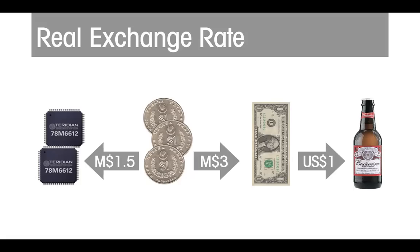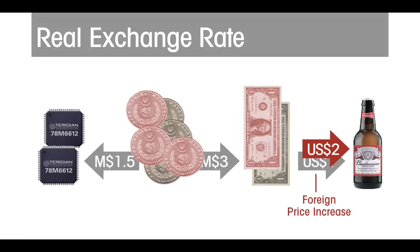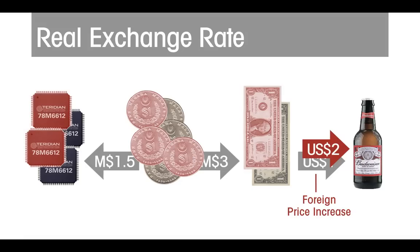But the concept is meaningless as an absolute number — its importance comes from when the value changes. Suppose there is a rise in the US price level, so that it now takes $2 to buy a beer. At 3 ringgits per dollar, you now need 6 ringgits, for which you will have to part with 4 chips. The cost of the beer has gone from 2 chips to 4. The real exchange rate has risen, even though the nominal rate has not moved. This means that Malaysia has suffered a real depreciation, since it now takes more of its product to buy the same beer.